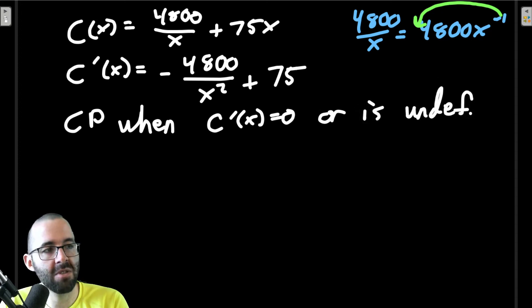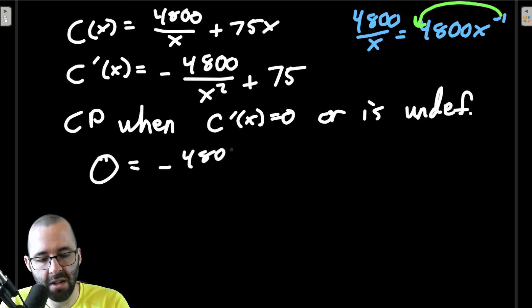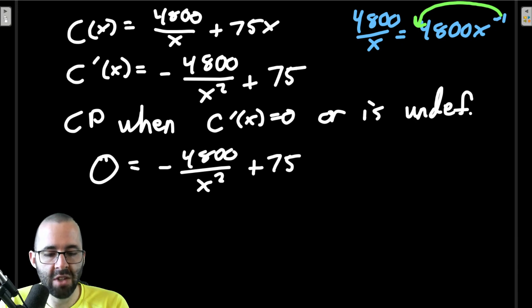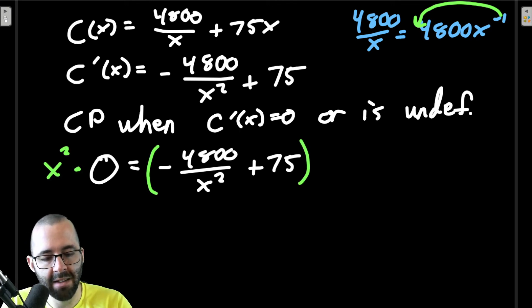We look for critical points, critical points when the derivative equals zero or is undefined. We'll set it equal to zero and solve for x. Zero equals negative 4800 over x² plus 75.